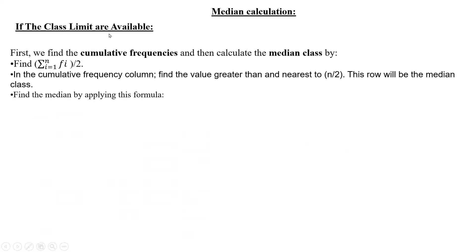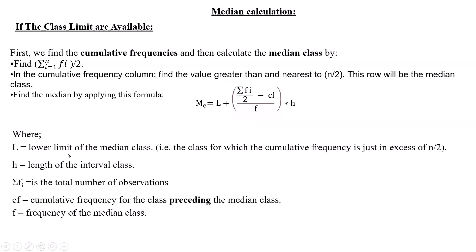Now let's find the median. First we calculate cumulative frequency, then identify the median class using the formula: n/2, taking the class whose cumulative frequency is greater than and nearest to n/2. The median formula is: Median = L + (h/f) × (Σfi/2 − cf), where L is the lower limit of the median class, h is the class interval length, Σfi is total observations, cf is cumulative frequency of the class preceding the median class, and f is the frequency of the median class.